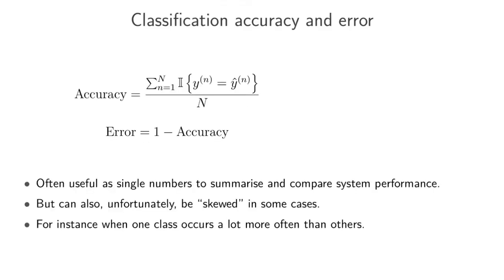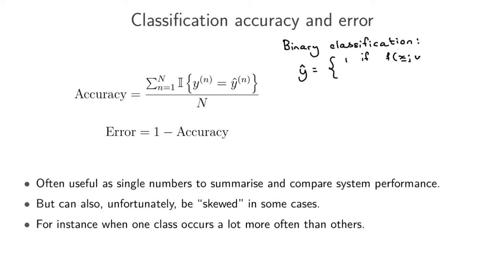The most obvious metric to use when you're doing classification is the classification accuracy. When we're doing binary classification, we predict the class is equal to 1 if our model's output is above 0.5, and the prediction is equal to 0 if the model output is less than 0.5.